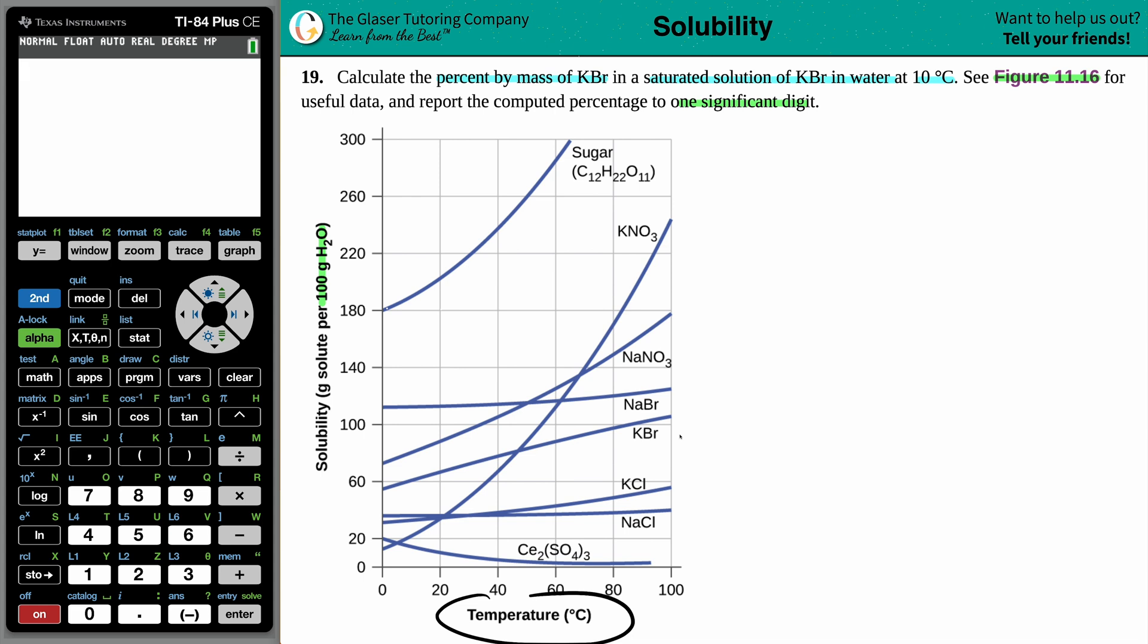So that amount of solute that is being dissolved in specifically 100 grams of H2O and the solubility changes how much you can dissolve at different temperatures. And for the most part, as we increase in temperature, as we're getting hotter and hotter and hotter, a lot of these lines are increasing,